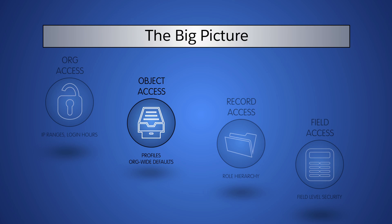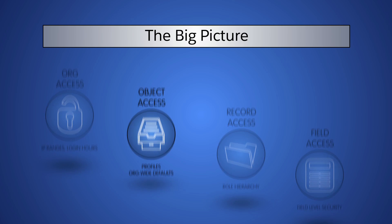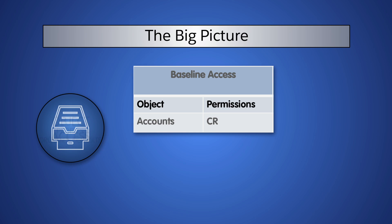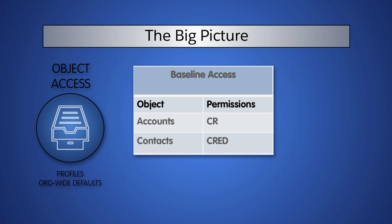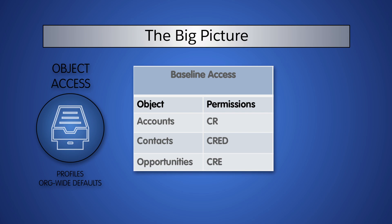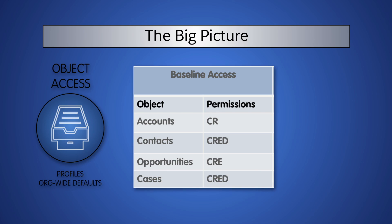At AW Computing, when we created our Inside Sales Rep profile, we set up the following permissions. Accounts: create and read — we don't want Inside Sales Reps to edit or delete accounts. Contacts: create, read, edit, and delete, so Inside Sales Reps can update information when talking to customers. Opportunities: create, read, and edit, but not delete, since we don't want reps deleting opportunities. Cases: we left the default settings of create, read, edit, delete. These are the correct settings for the records that each Inside Sales Rep owns.